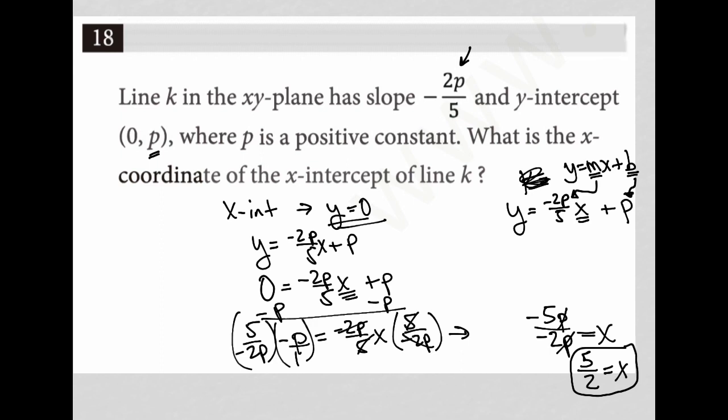No way I would have known that I would get there using this process necessarily from the very start. But I'm just picking up on all the cues. The question tells me I have a line. Whenever I think about a line, I'm immediately thinking Y equals MX plus P. The question tells me that the slope of that line is negative 2P over 5. So that means that's my M value. The question also tells me that the Y-intercept is 0, P, which means technically P is my B value, the Y-intercept position in that equation.